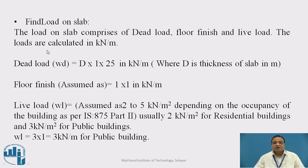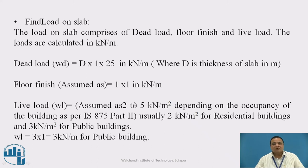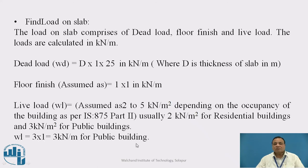Next, find the loads on the slab. The load on slab comprises dead load, floor finish, and live load, calculated in kilonewton per meter. Dead load equals the overall depth of the slab in meters times 1 times 25 (unit weight of concrete, 25 kN/m³). Floor finish is usually taken as 1 kN/m². Live load WL is assumed between 2 to 5 kN/m² depending upon the occupancy of the building — as per IS 875 Part 2, usually 2 kN/m² for residential and 3 kN/m² for public buildings.